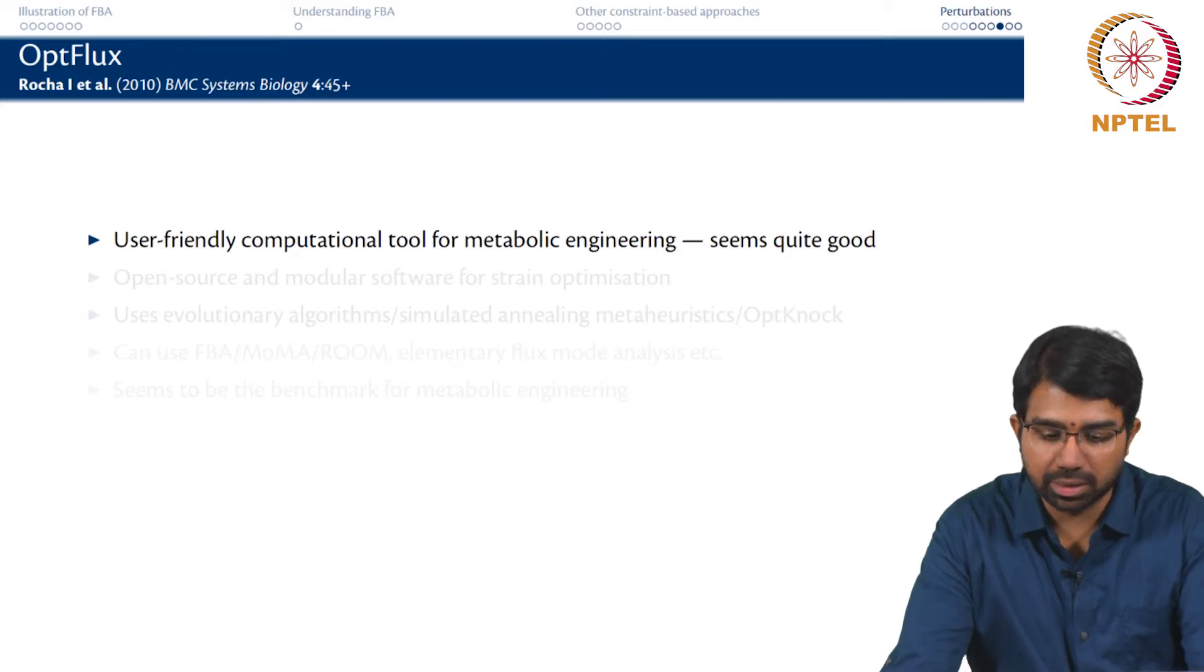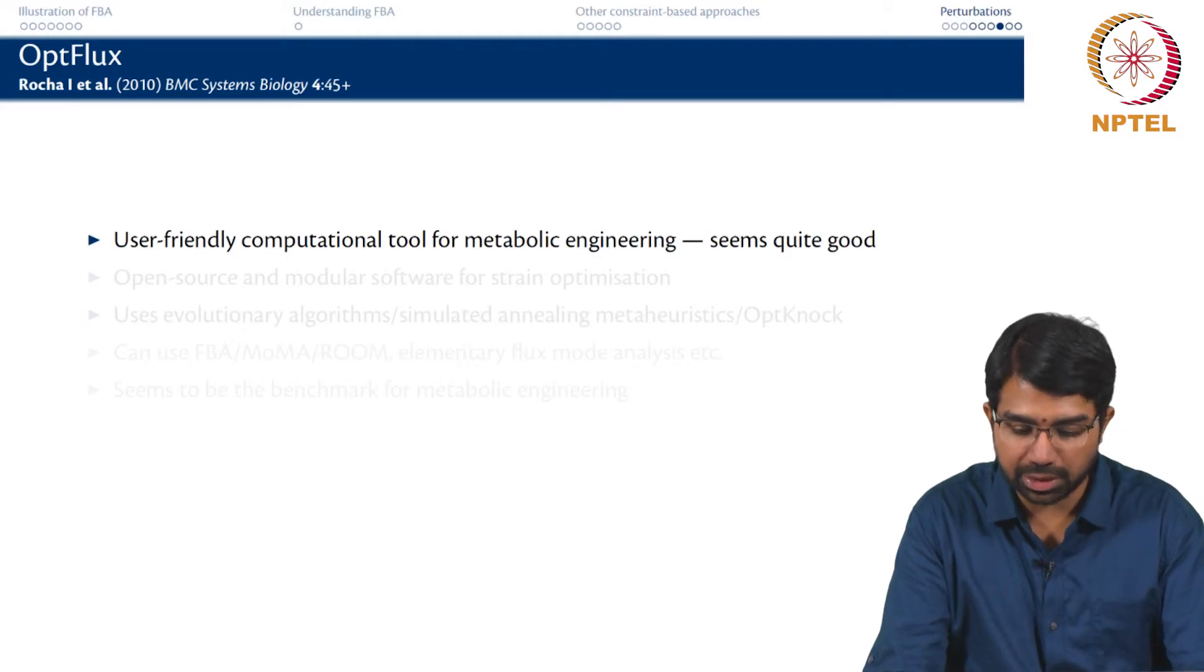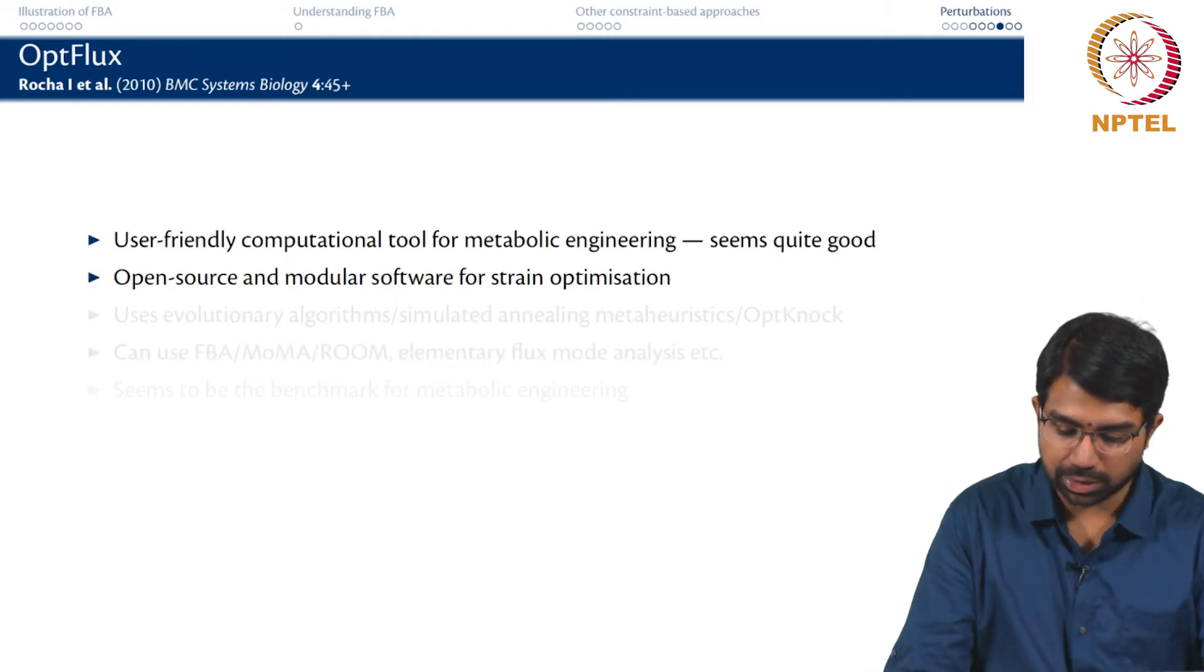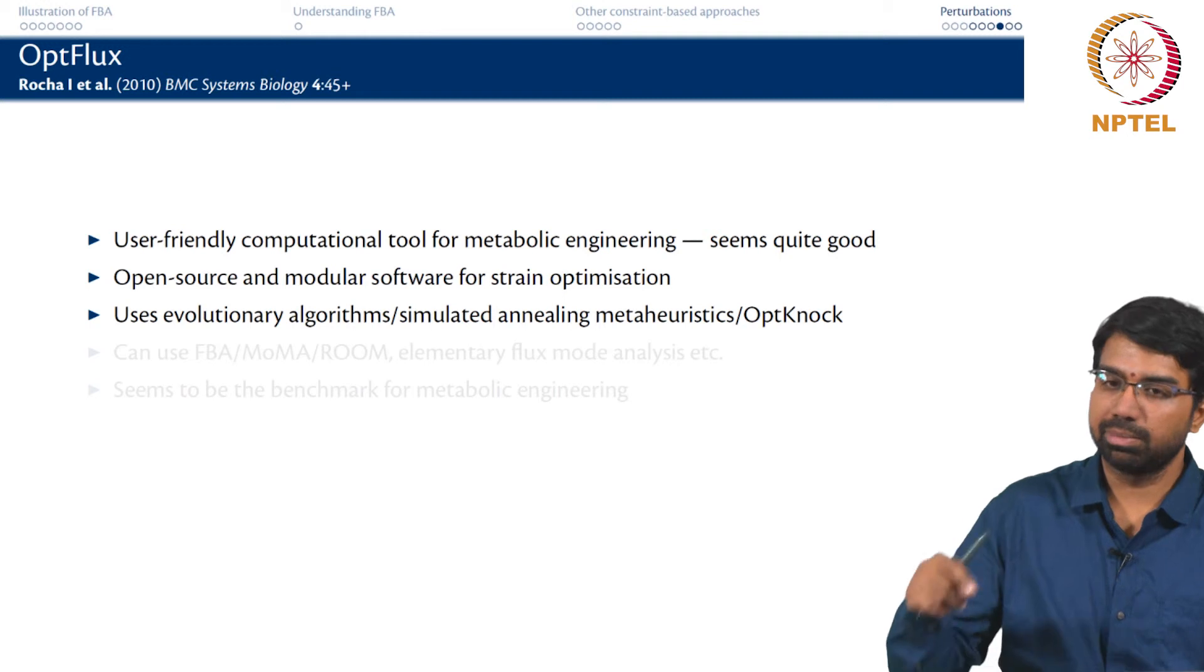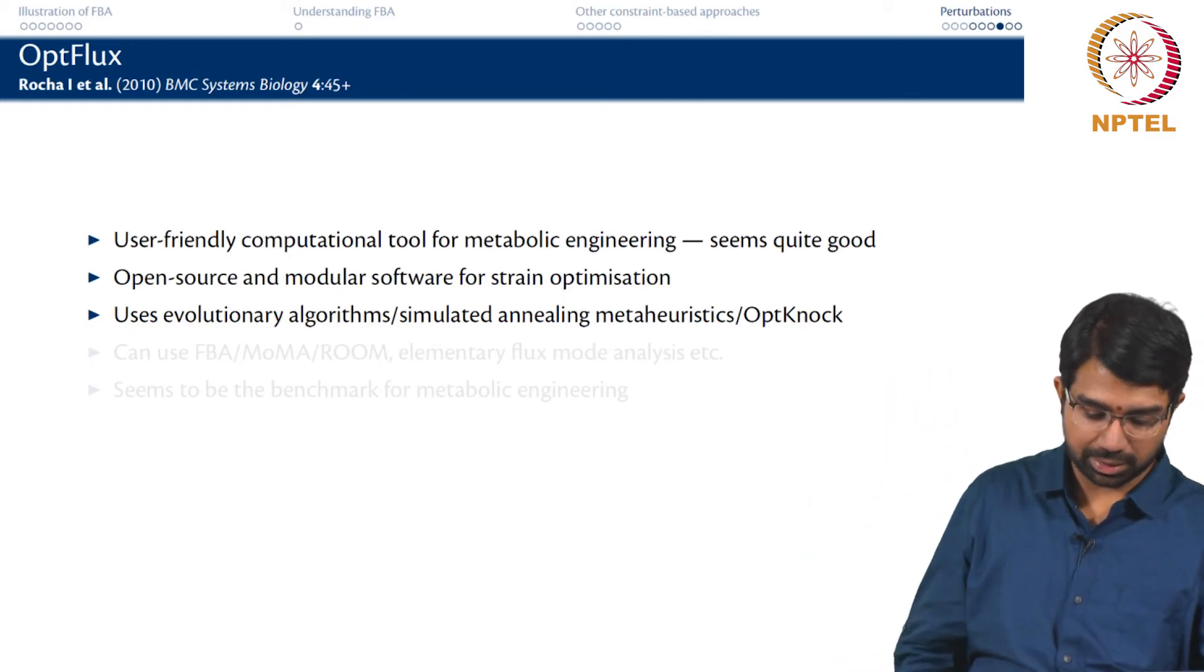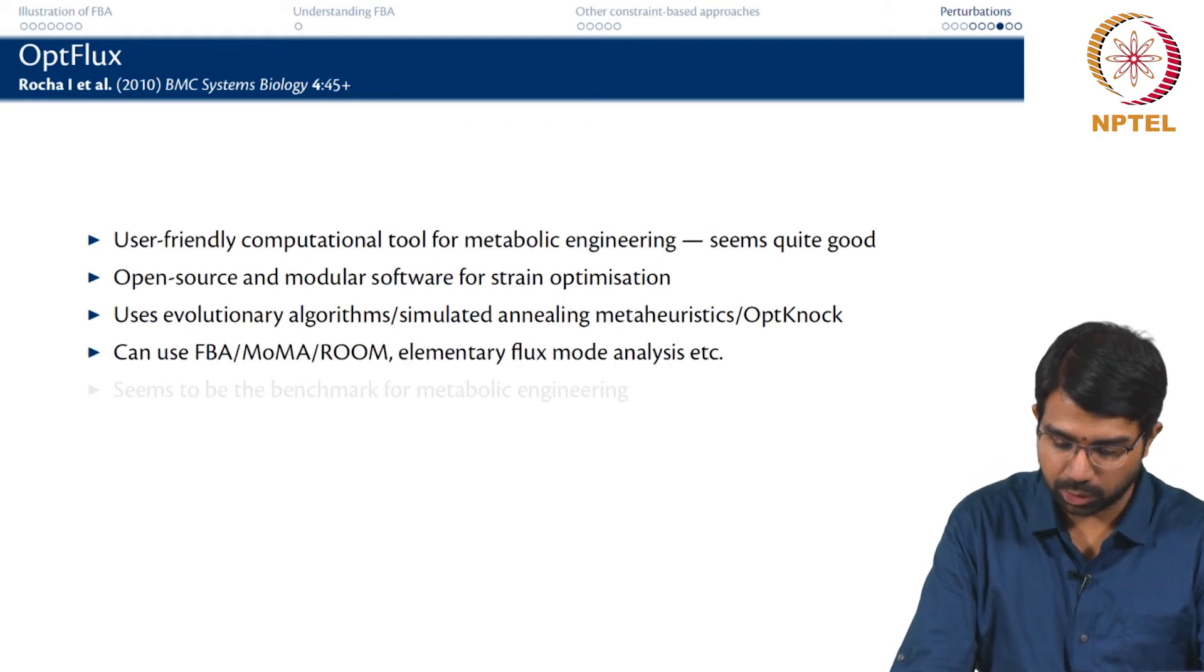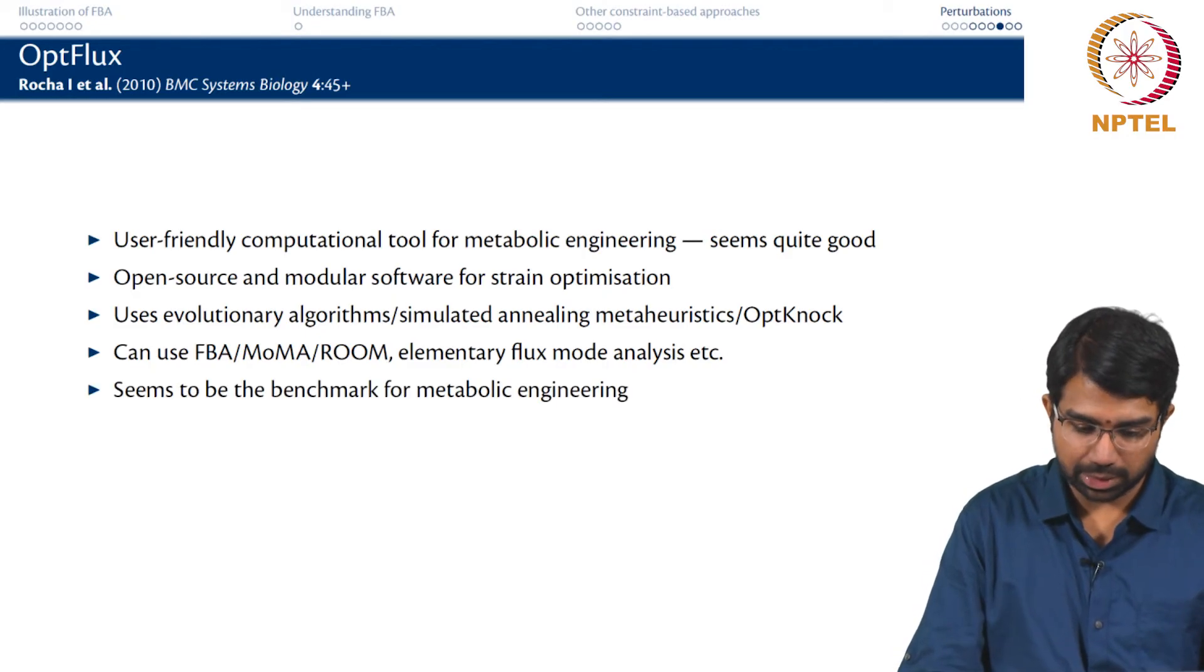There are some very nice tools that are useful for these kinds of studies. There is OptFlux which is a very user-friendly computational tool for metabolic engineering. It is an open source and modular software for strain optimization. It also uses simulated annealing and evolutionary algorithms to optimize the genotype. It basically tries to do a search in genotype space. The optimization is essentially on the genotype. Can I find the best genotype that has the optimal genotype that has my interesting phenotype? It can use FBA, MOMA, ROOM and there are other 2. So we will study about elementary fluxes later on and it seems to be the benchmark for metabolic engineering.